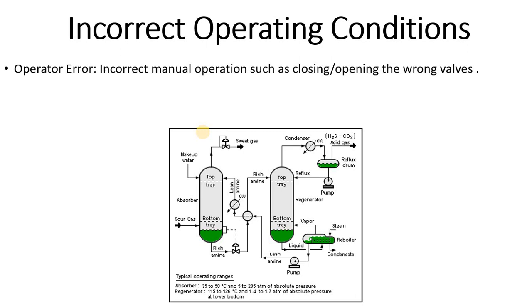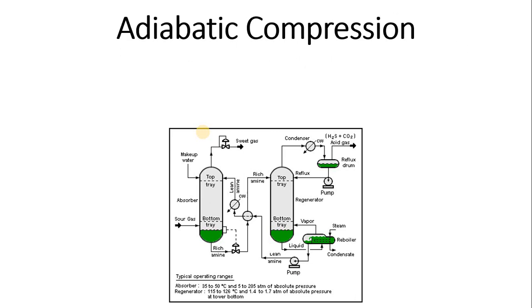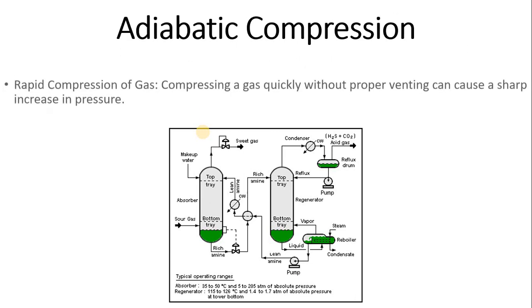Incorrect operating conditions — essentially human error — are another cause. If an inexperienced person sets operating conditions incorrectly, over-pressurization can occur, whether at the DCS or in the plant. Please ensure correct operating conditions are maintained, as this is very important. Misalignment — not knowing which valve to open or close — can also lead to over-pressurization.